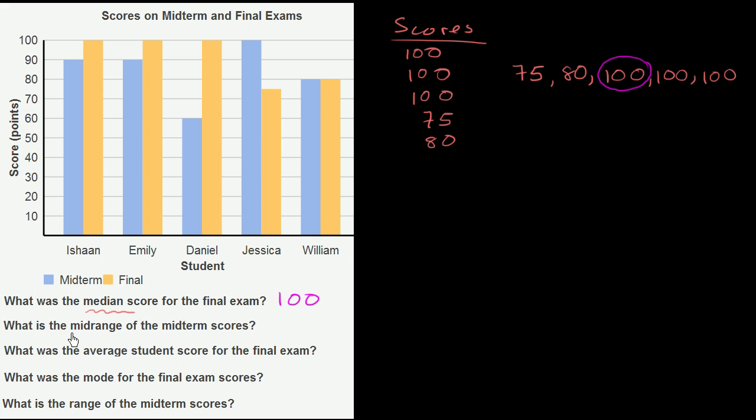What is the midrange of the midterm scores? The midrange is the mean of your highest and lowest scores. You can view it as the arithmetic mean, or average, of your highest and lowest scores. Let's calculate the midrange of the midterm.